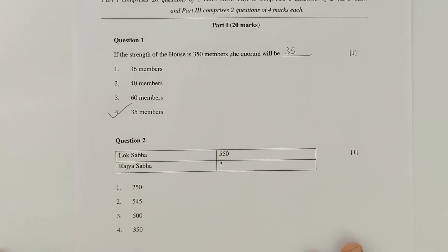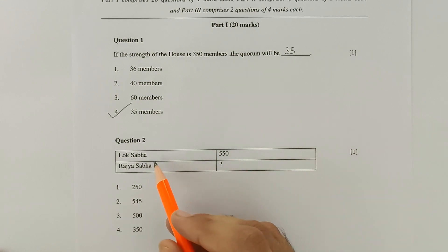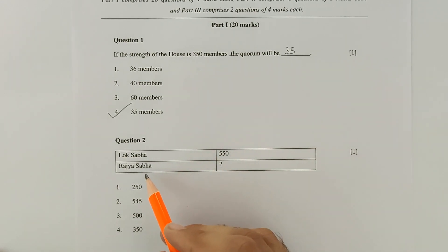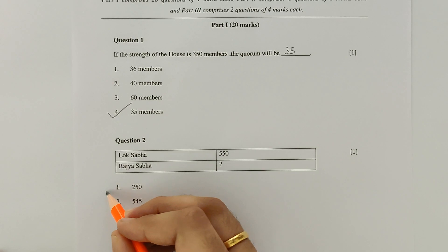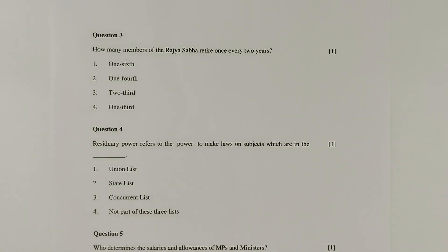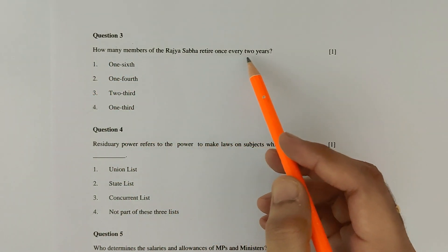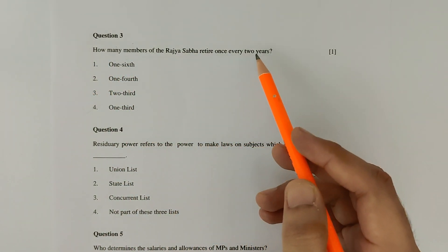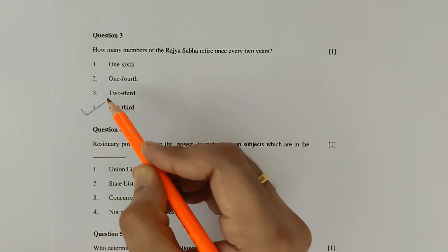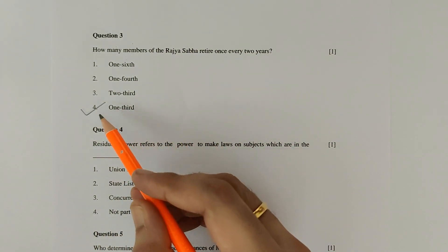Moving on to question 2: Lok Sabha — 550, Rajya Sabha — ? The strength of Lok Sabha is 550 and the strength of Rajya Sabha is 250. That is option 1. Question 3: How many members of the Rajya Sabha retire once every 2 years? One-third of the members retire once every 2 years. Hence option 4 is correct.